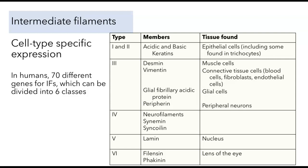Let me walk you through some of the different members of the family shown in this table, working from the bottom up. Phylensin and phykinin are two types of intermediate filaments found in the lens of the eye. These proteins are the most distantly related to the rest of the intermediate filament family, and I won't talk about them in more detail.